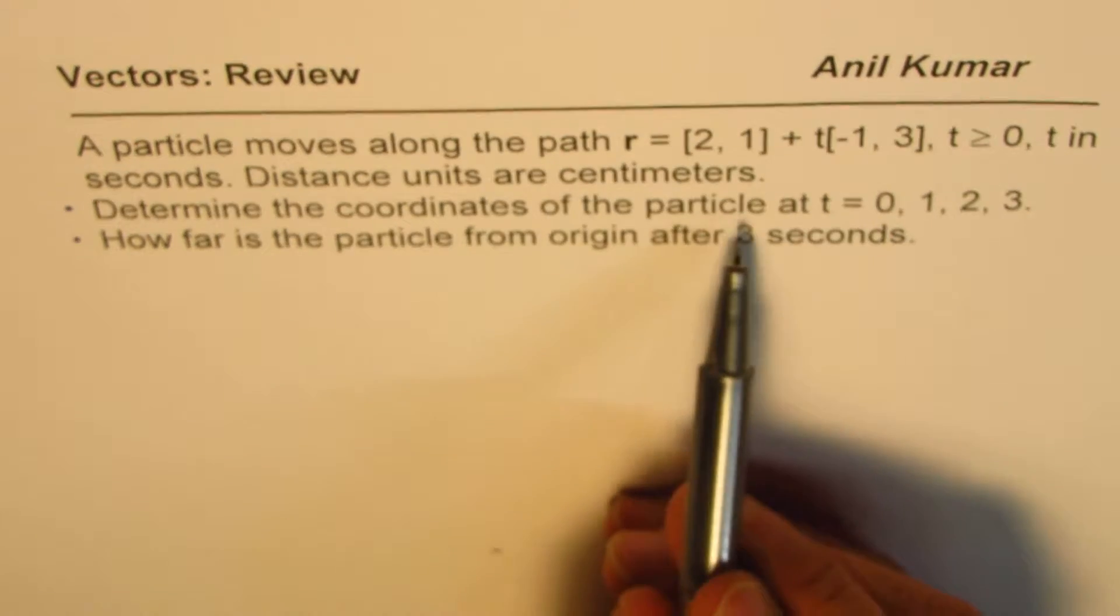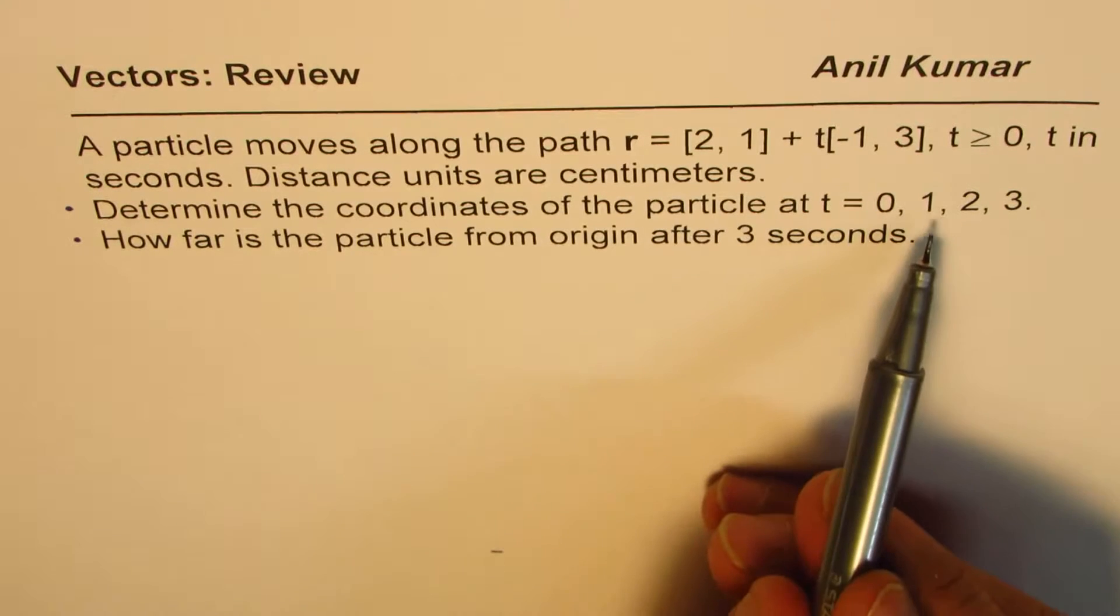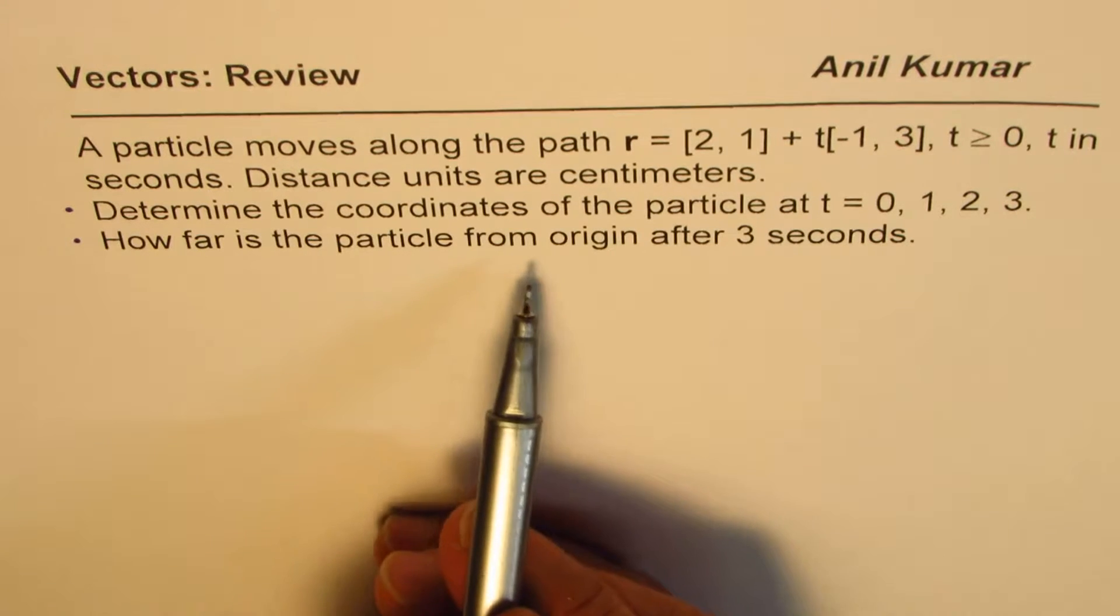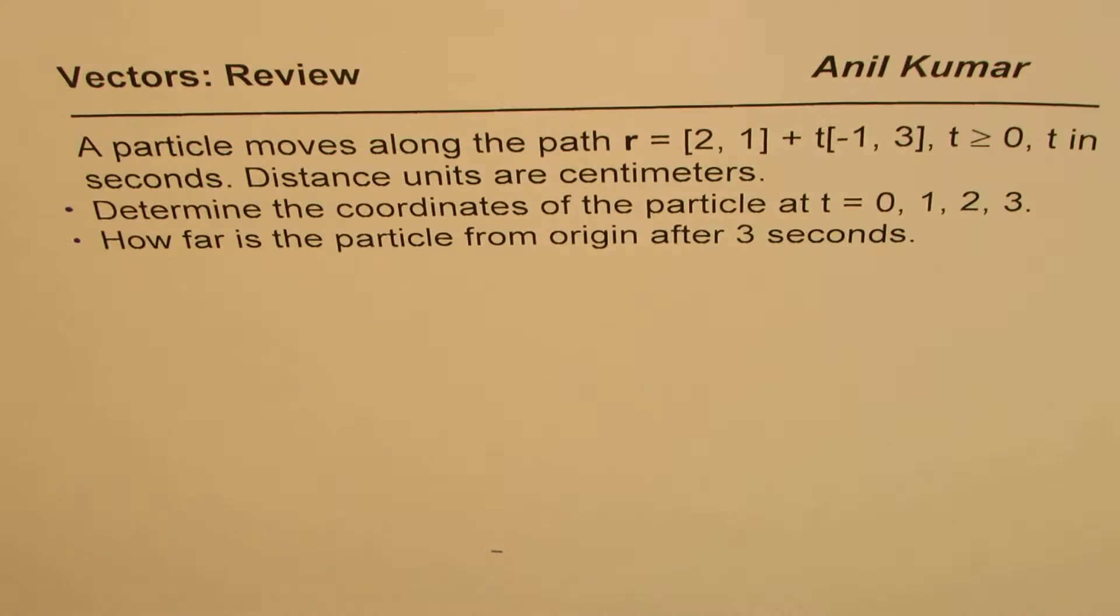Determine the coordinates of the particle at t equals 0, 1, 2, and 3. Part b is how far is the particle from origin after 3 seconds.